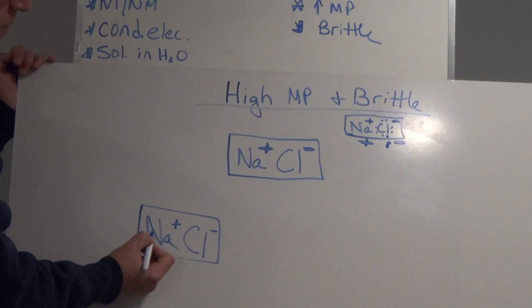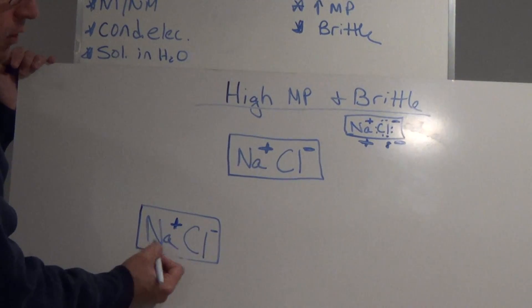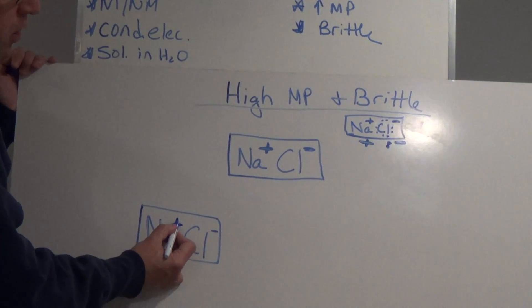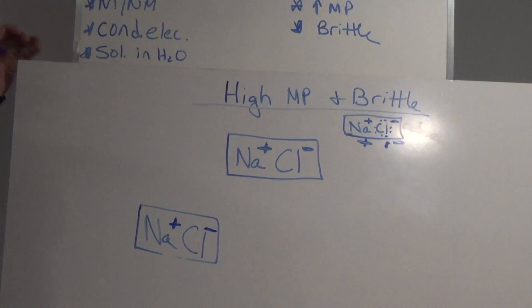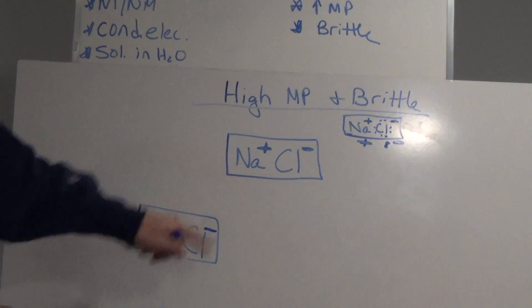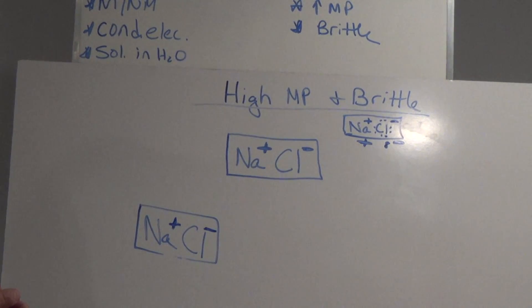So right here, we have sodium chloride. Strongly positive sodium ion on one end of the molecule, strongly negative chloride on the other side. So if these two had to coexist, how would they arrange themselves?